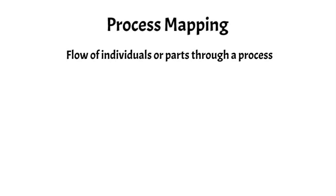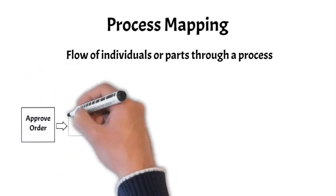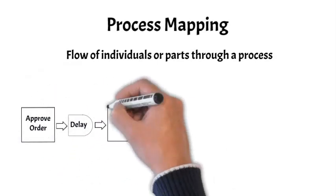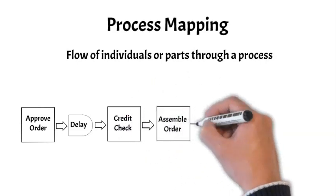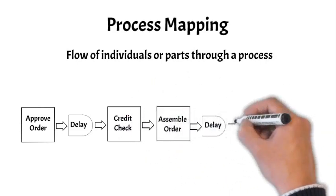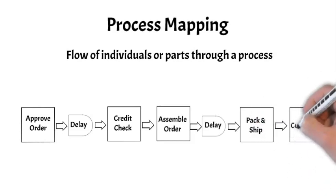A simple order processing system is shown below. Orders are approved, credit is checked, the order is assembled, and finally the order is packed and shipped. In this oversimplified value stream map, we can see that process steps are represented by rectangles while delays are represented by a shape like the letter D. These delays are identified in this map and are likely to be considered for further analysis with the expectation that they can be either minimized or eliminated.